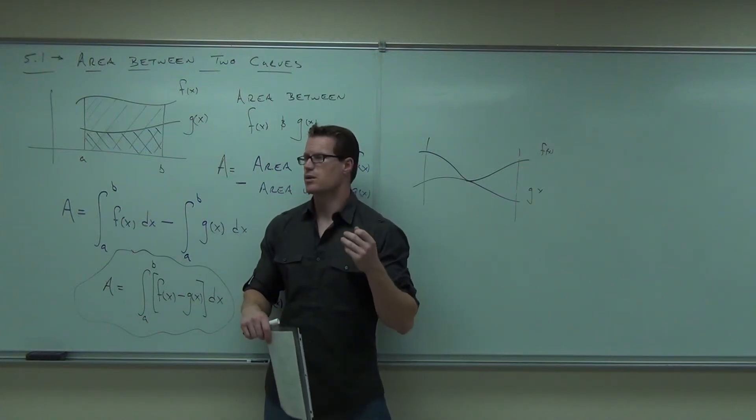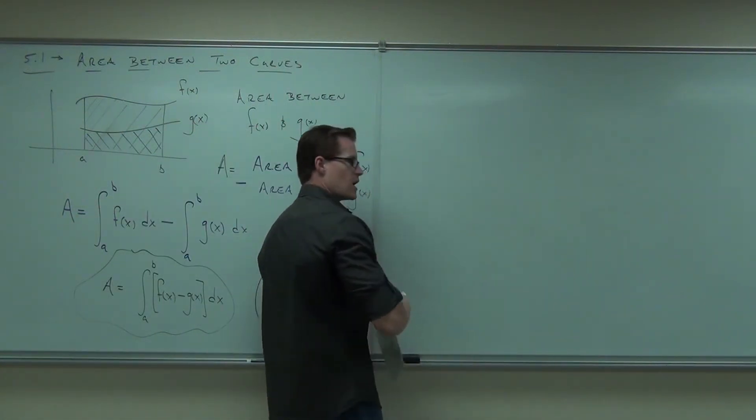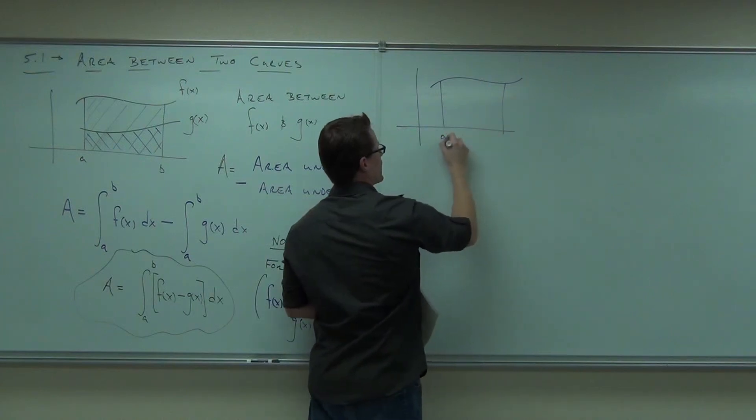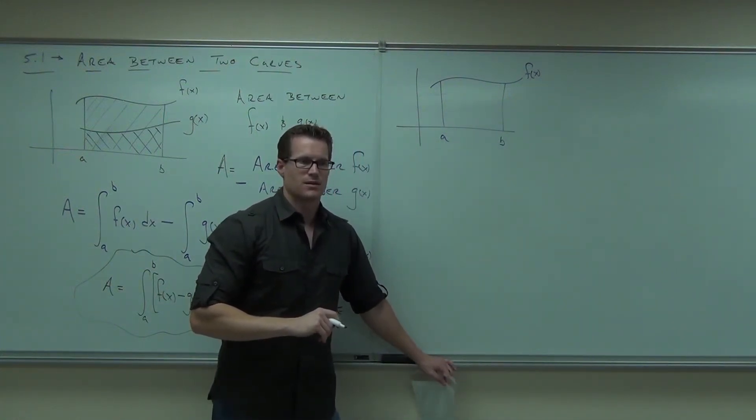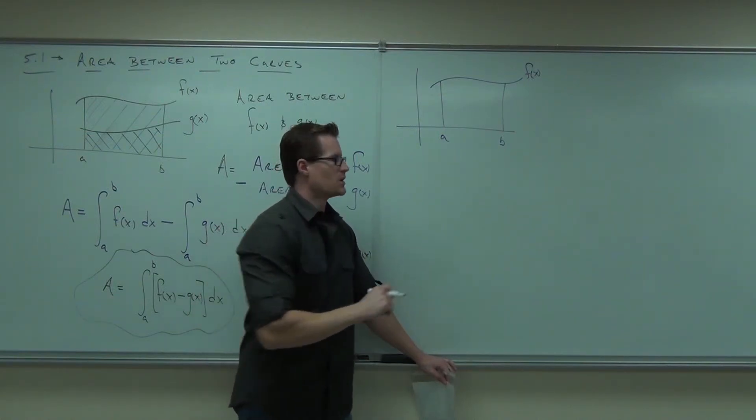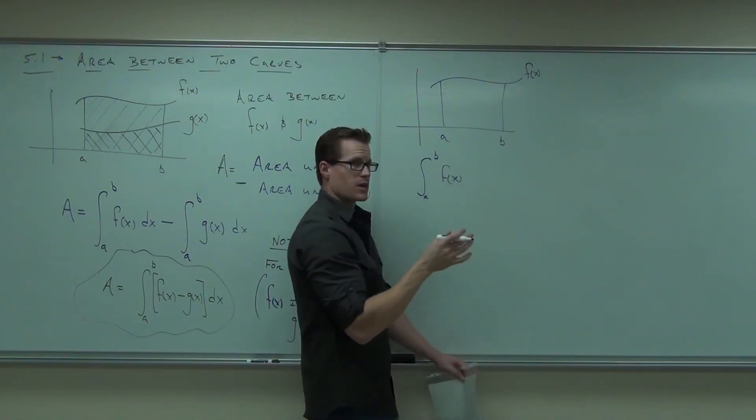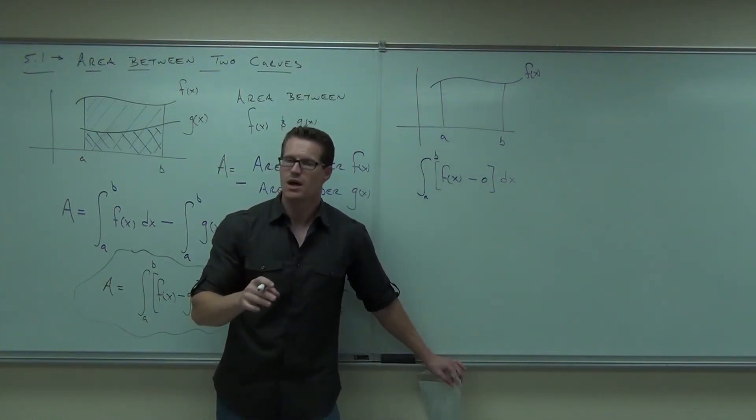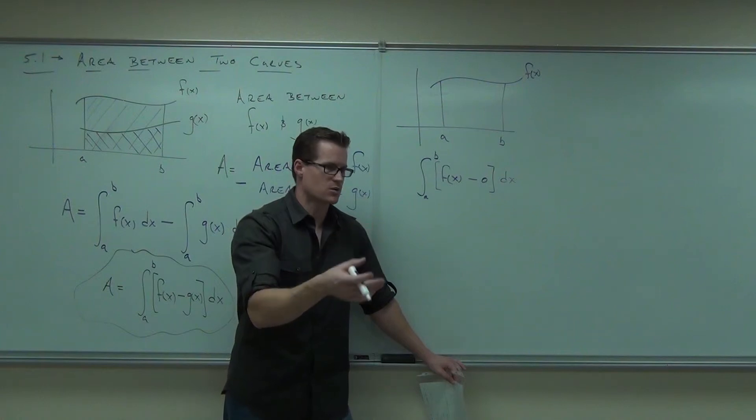Did you understand the concept that if f of x is not on top of g of x the whole time, if it does this, then this area would be probably positive, but this area would be negative, and it would get rid of some of the positive area that you're looking for. So, basically, we're looking for the total area. Notice that we have done this the whole time. We really have. Here's why we've done this the whole time. So, when I ask you to find the area under a curve, what you've interpreted that as is the area between f of x and what?